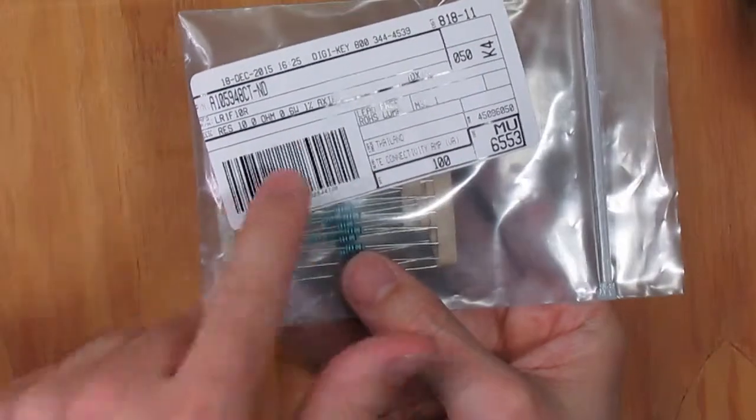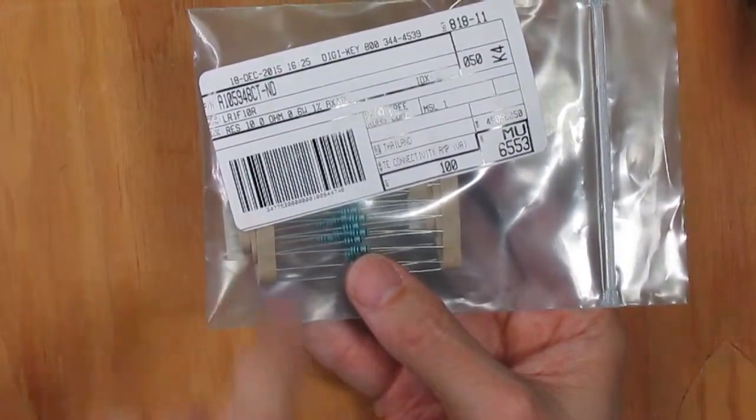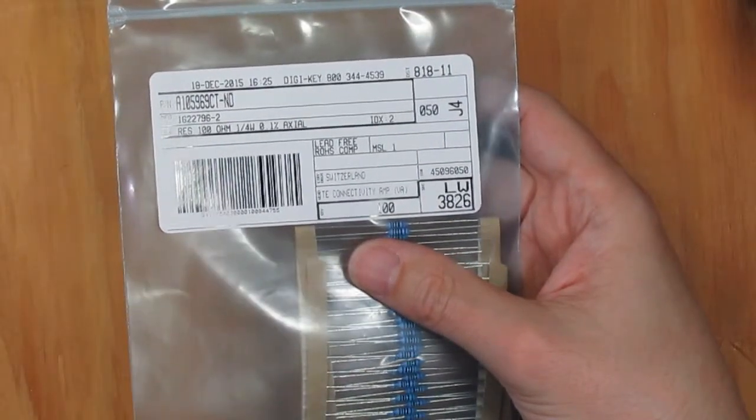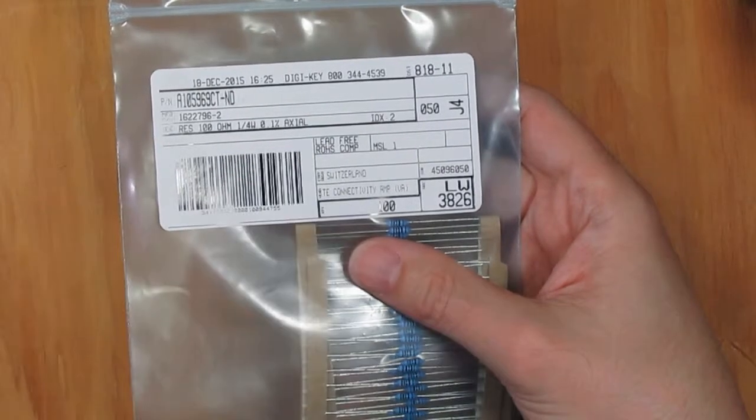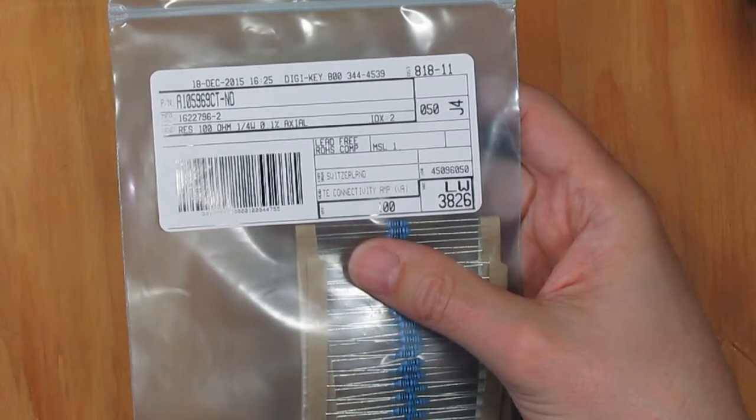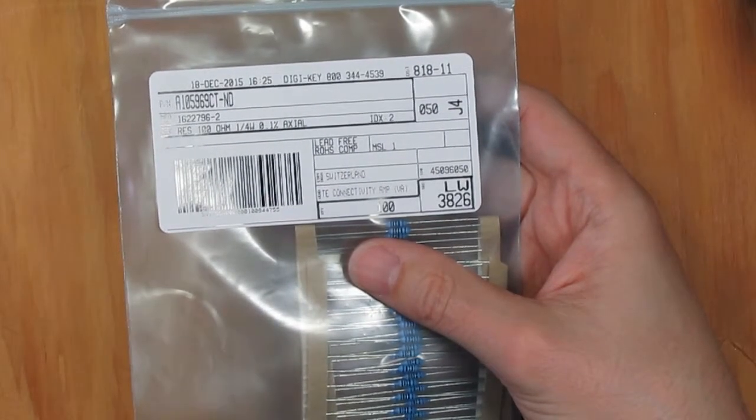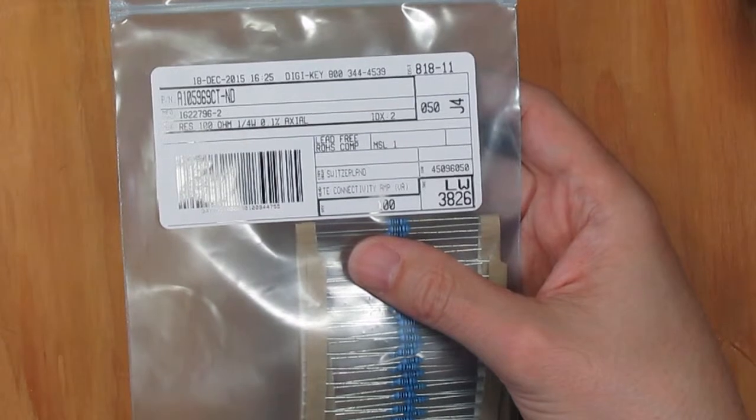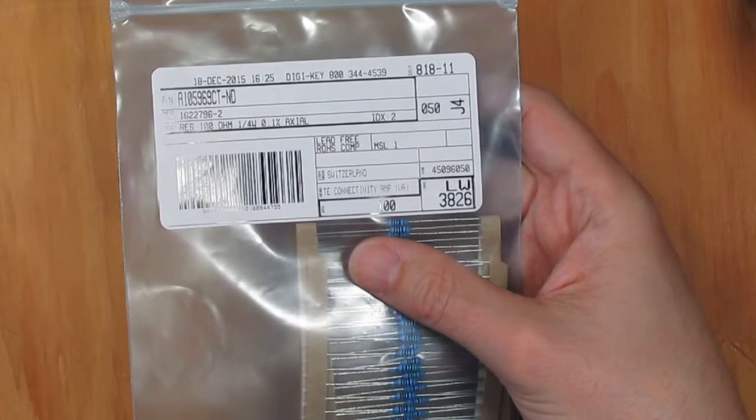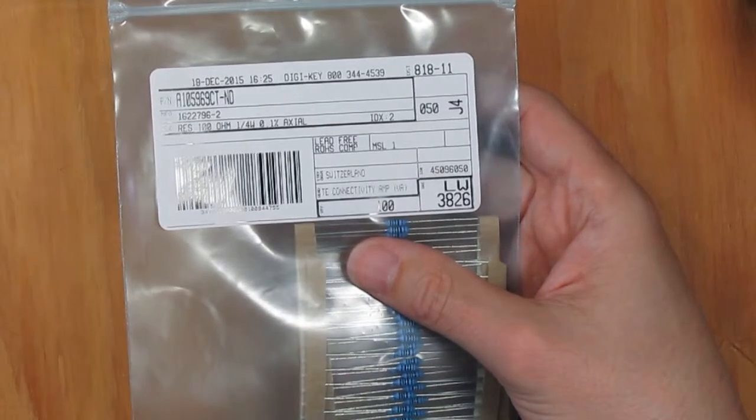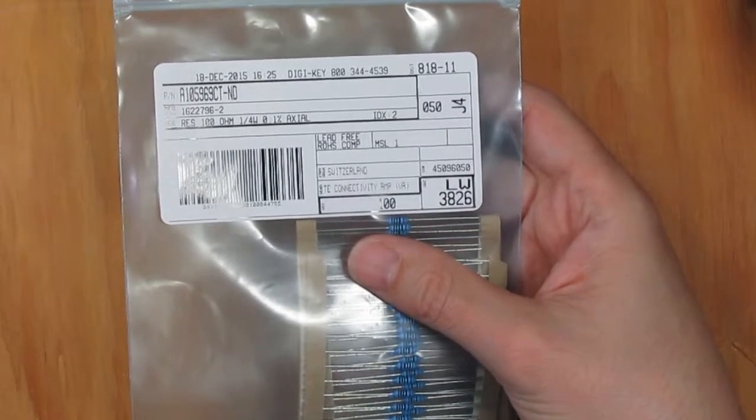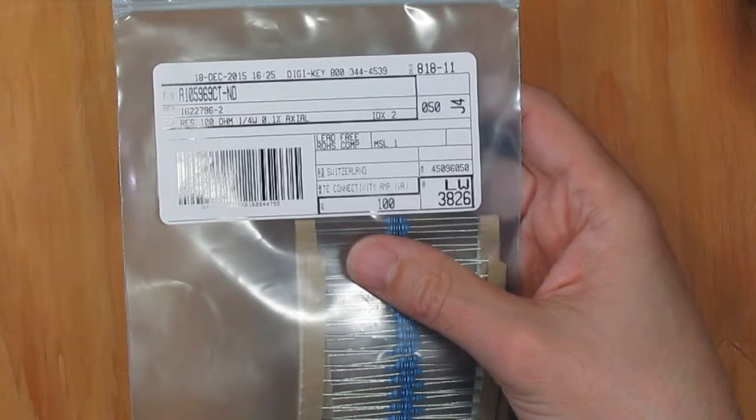Now the 10 ohm resistors, I bought those as 1% because that'll be 0.1 ohm. And for the 100 ohm resistors, I bought those 0.1% because that'll be 0.1 ohm again. You can buy resistors with a smaller tolerance than this, but at some point there's a big jump in cost going to the next lower tolerance. There's kind of a sweet spot where you're not paying too much extra for the lower tolerance resistors, and 0.1% was the sweet spot here for the 100 ohm resistors, which was fine because that's what I wanted.